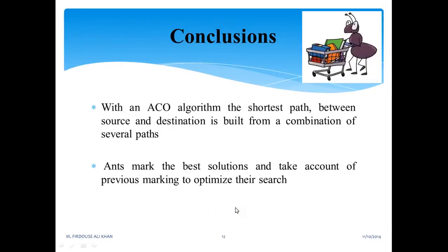Now coming to the conclusion: with an ACO algorithm, the shortest path between source and destination is built from a combination of several paths. It marks the best solution and takes into account previous markings to optimize the search. Inspiration from nature, but with smarter agents. Ants are more smarter than expected.